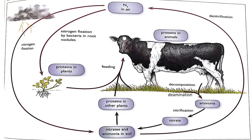Next is the nitrogen cycle, which is a bit more confusing. We start with deamination, which occurs from all living animals because they excrete. Once deamination occurs, ammonia is released into the ground. It then decomposes and nitrifies into nitrate ions. The nitrates and ammonia in the soil can produce proteins for plants to grow, because plants require nitrate ions for growth. This is where your nitrates come from. Fertilizers are also mostly nitrate ions, which is why they help plants grow faster.